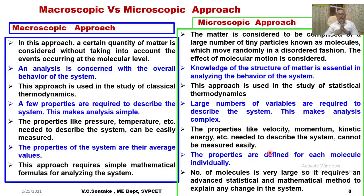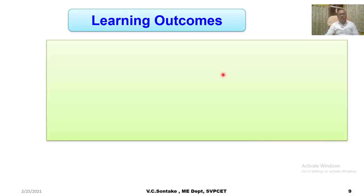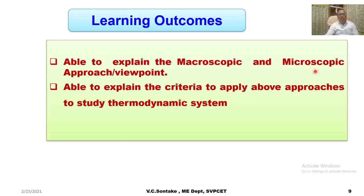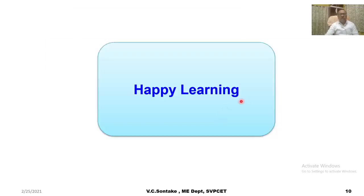In nutshell, the macroscopic approach considers the overall or average effect of molecules to decide the behaviour of the system, whereas the microscopic approach considers the effect of the behaviour of each molecule on the overall behaviour of the system. After watching this video, the learner will be able to explain the macroscopic and microscopic approach or viewpoint, and will be able to explain the criteria for where to apply these two approaches to study a thermodynamic system. With this, I come to an end of this video lecture. Thank you for your kind attention and passionate listening. Happy learning!